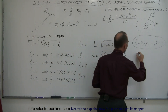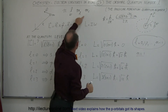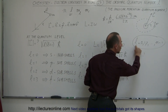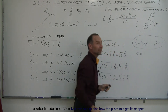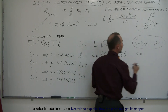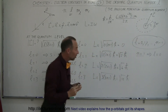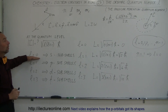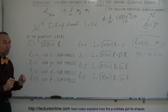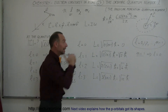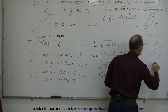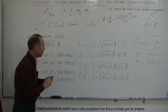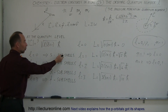When n equals 1, the lowest energy level, L can only be 0 — it can only be up to 1 less than n. This means the lowest energy level can only have s orbitals; no p orbitals, no d orbitals. When n equals 2, L can be 0 or 1, so at that energy level you can have both s-type sub-shells and p orbitals.